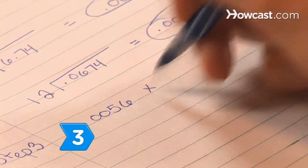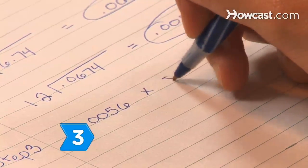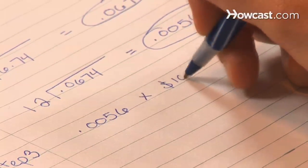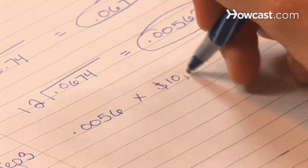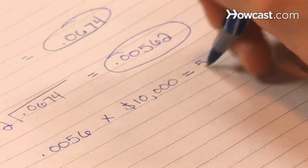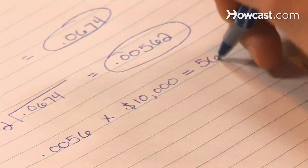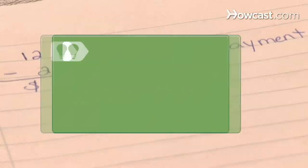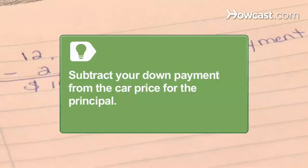Step 3. Multiply the number by the loan's principal amount — the total amount of your car loan. Write this number down, as it will be used in your final calculation. Remember to subtract any down payment you might make from the new car's purchase price when figuring out the principal amount.